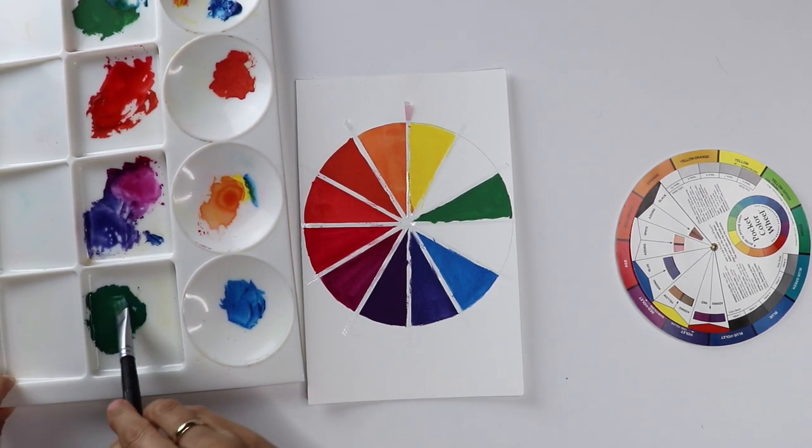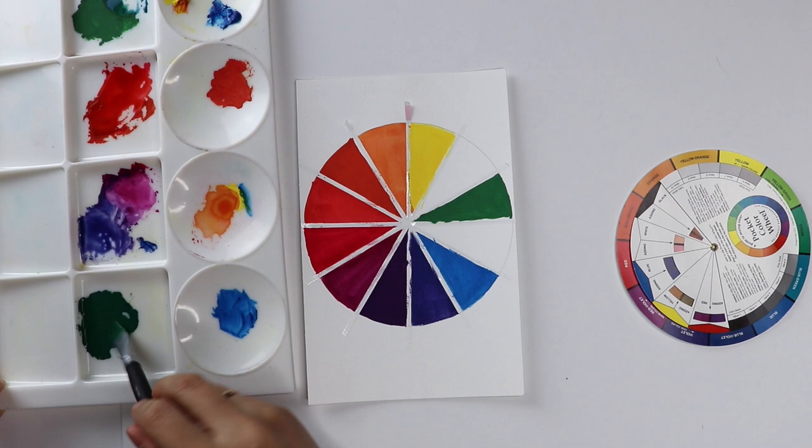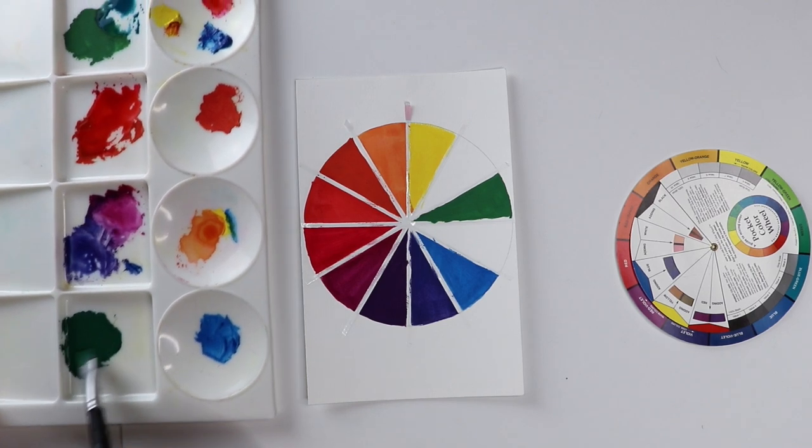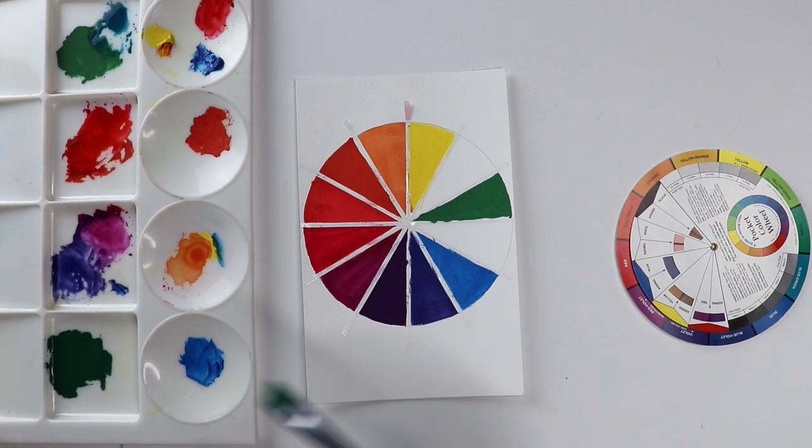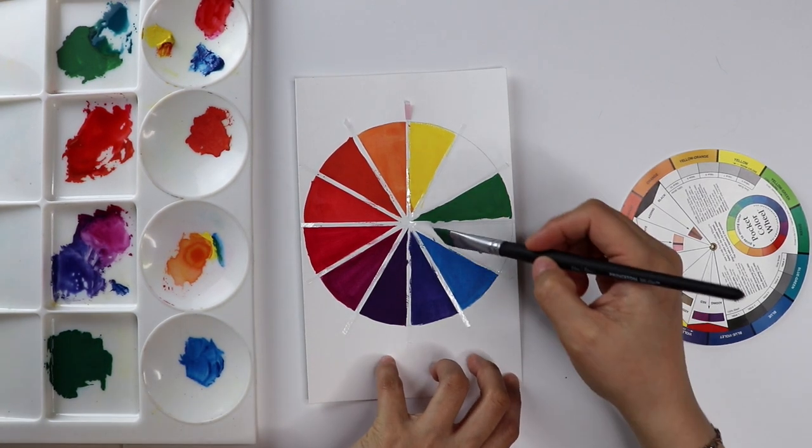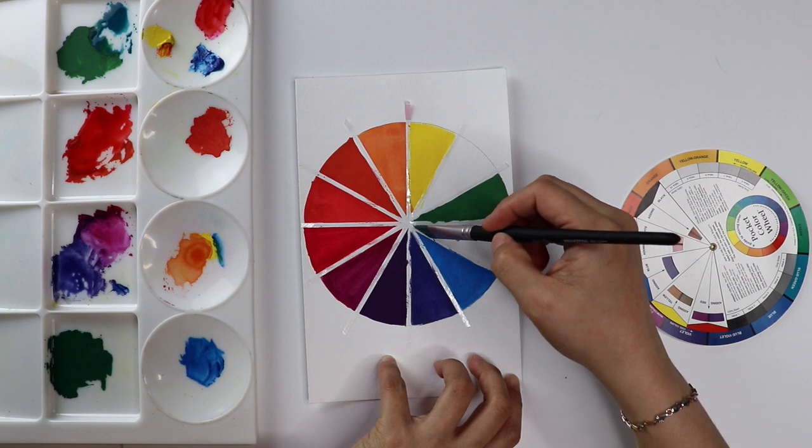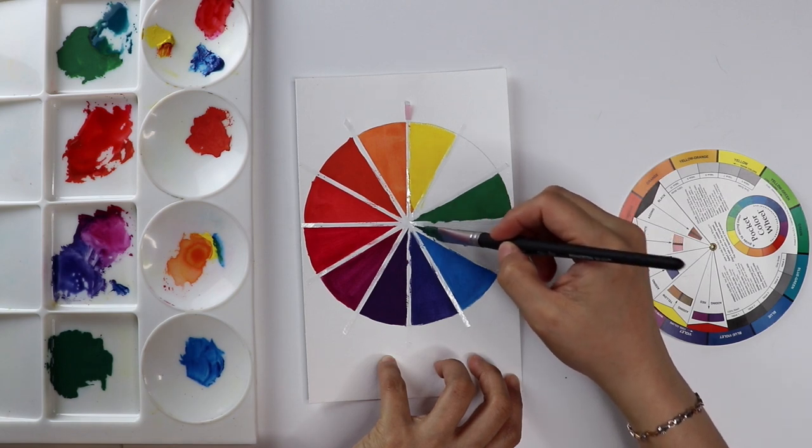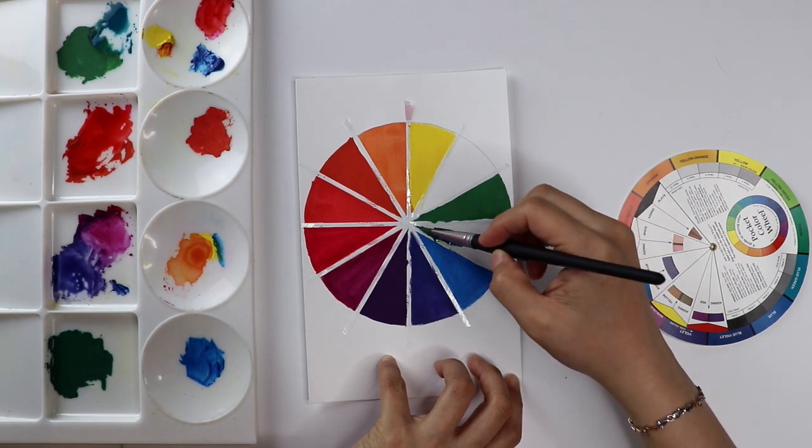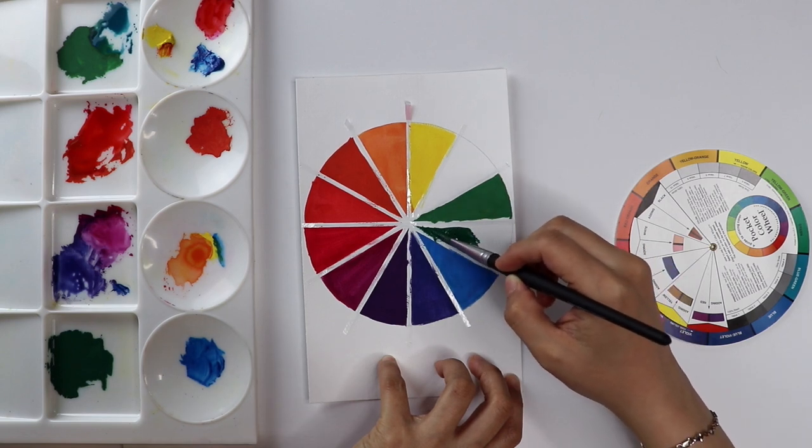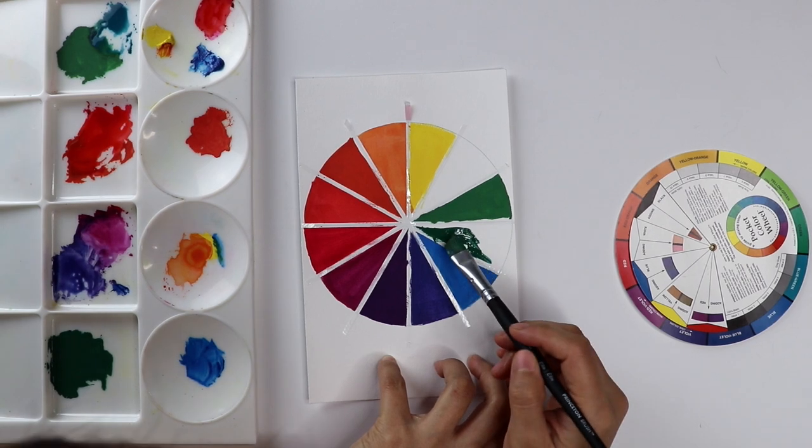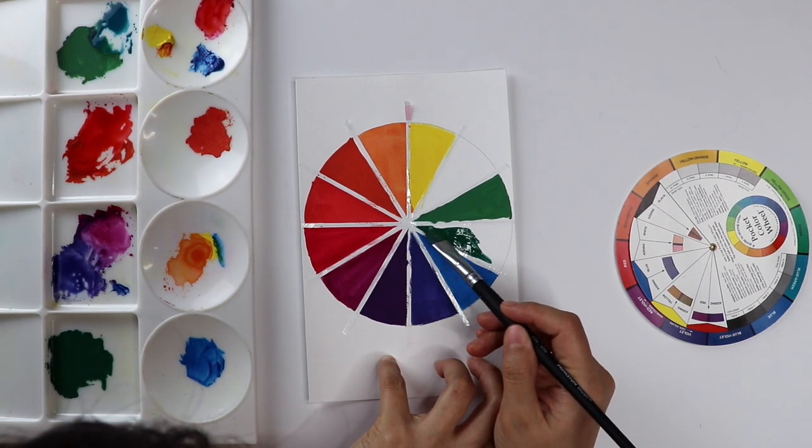The last step is to mix and paint the tertiary colors into the color wheel. There are six of these colors: yellow green, blue green, blue violet, red violet, red orange, and yellow orange. As you see from the video, the two colors I'm finishing here are blue green and yellow green.